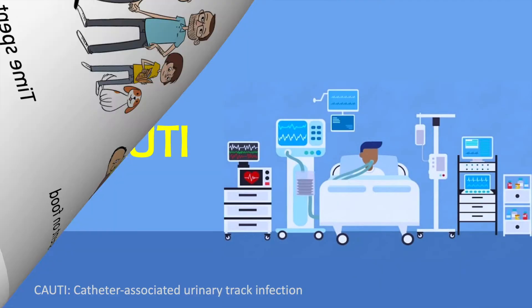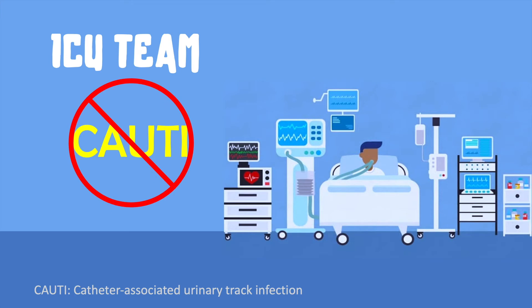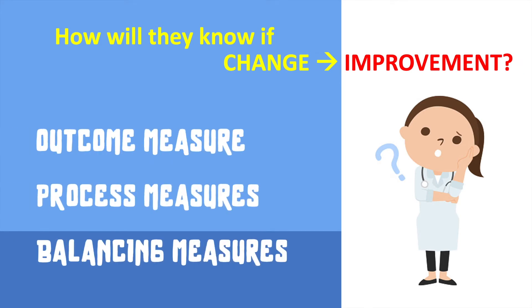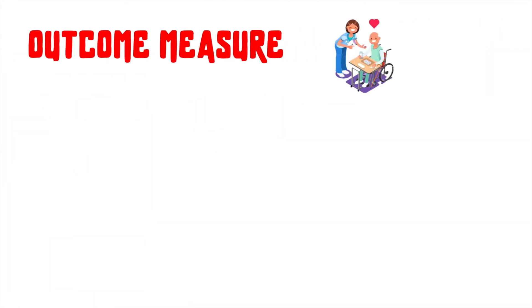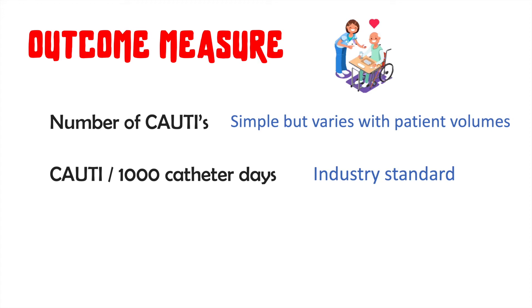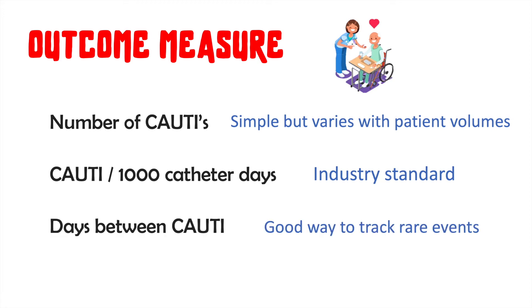Now let's move to a healthcare example. The ICU team wants to reduce CAUTIs, which are urinary tract infections related to use of Foley catheters. CAUTIs lead to poor patient outcomes and high cost. How will the ICU team know if their change efforts are leading to improvement? That's where the family of measures come in. In this case, the outcome measure is what the ICU team really wants to improve. There are multiple ways to define this. It could be the number of CAUTIs per month — this is simple and to the point. However, this will be impacted by changes in ICU patient volumes each month. The ICU team can choose CAUTIs per thousand catheter days as their outcome measure, and this is the industry standard for CAUTI measures. Another way to measure could be the days between CAUTI events. Days between events is a good way to track things that don't occur very frequently.